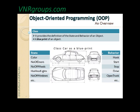The behavior, as I mentioned, is the action items that the object can possess. What can a car do? A car can honk, start, stop, drive, open the trunk, and so on. There are a number of action items that a car can do. So if you compare the class definition, it pretty much has the state and behavior information within it.